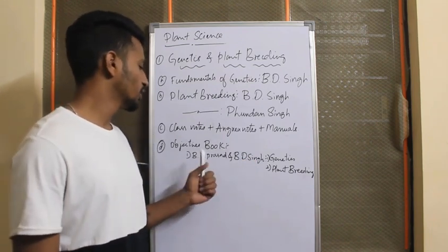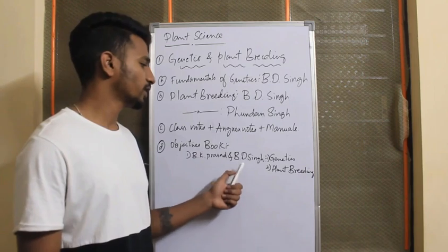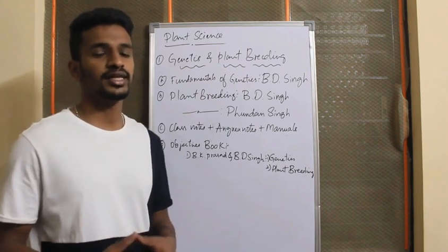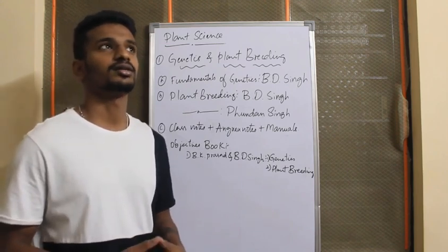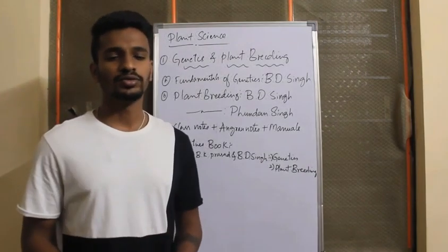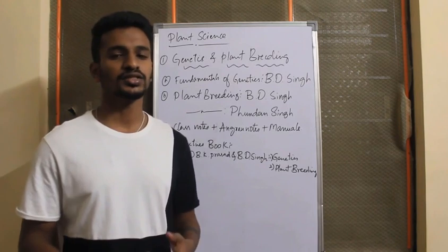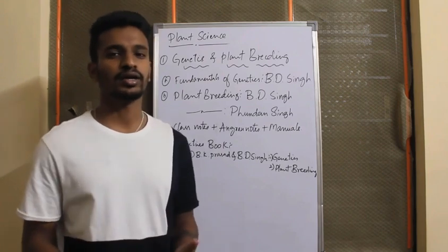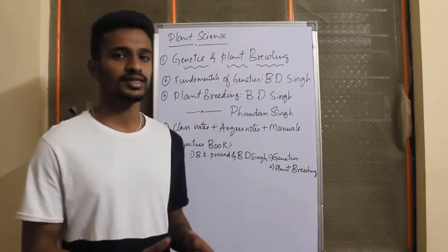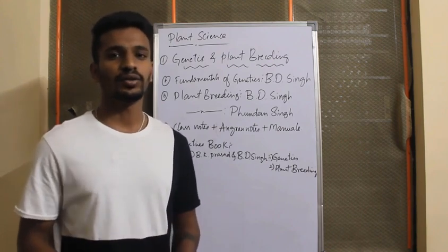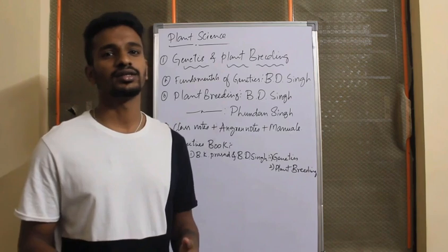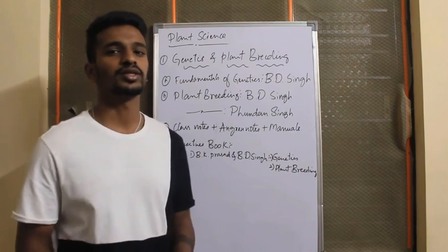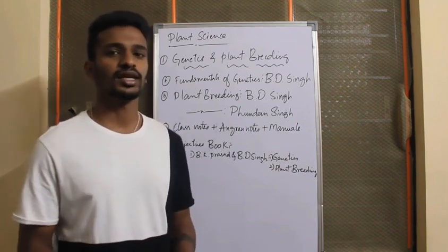Coming to the objectives books: objectives books by BK Prasadhan and BDC are there for both genetics and plant breeding. I suggest you take the objectives last, after completing each and every subject clearly and thoroughly. Solving objectives may not help you much, as the trend is changing and questions from objectives books are very rare now. However, going through them will help you understand the pattern of questions and the type of applied questions that can be asked. I suggest you complete all the syllabus first, revise it twice or thrice, and then go for solving the objectives.